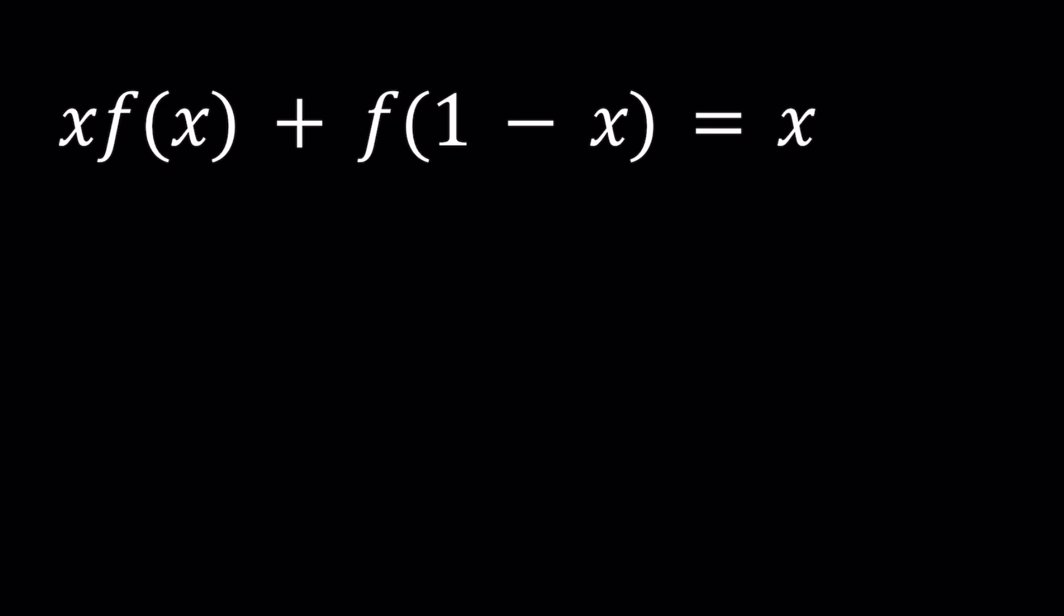Notice one thing here. If 1 minus x is equal to t, then 1 equals x plus t, and 1 minus t is equal to x. So these two are kind of like inverse functions, or if you try to find the inverse of 1 minus x, you're going to get the same thing. The inverse of 1 minus x is 1 minus x. So what is that supposed to mean?